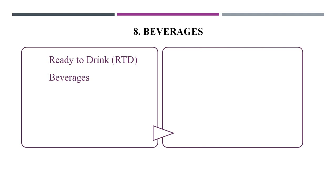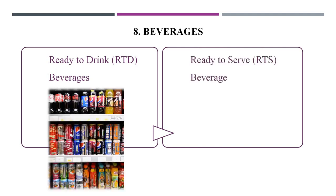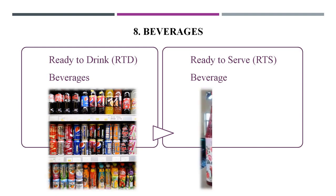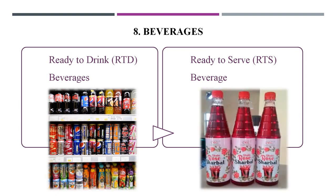Beverages can be classified into two types: ready-to-drink beverages and ready-to-serve beverages. Ready-to-drink beverages are drinks that can be directly consumed from the container, like apple juice, mango drinks, strawberry shake, and milk-based beverages. Ready-to-serve beverages need some preparation before serving.